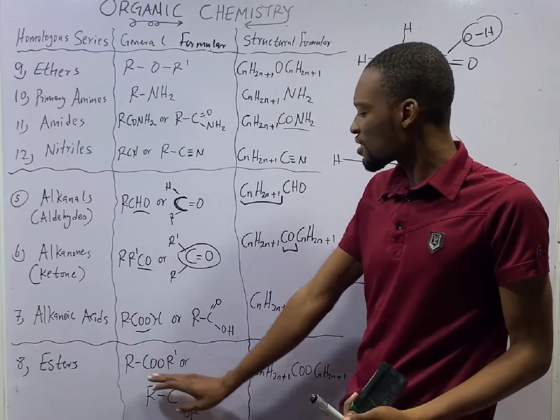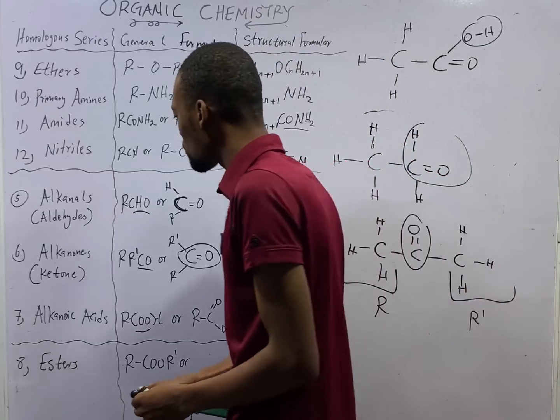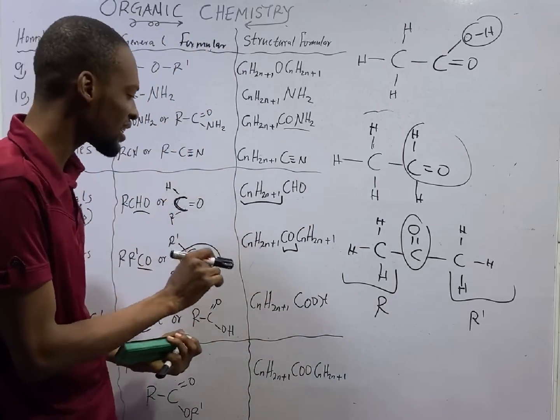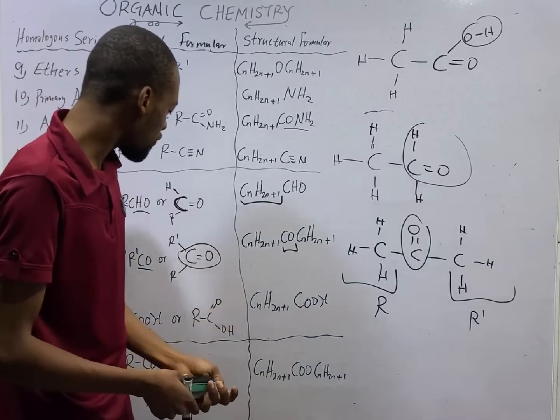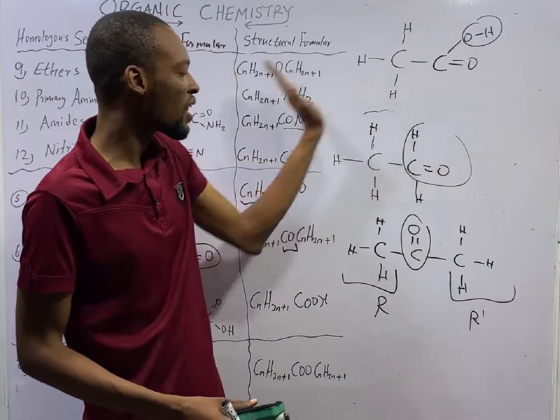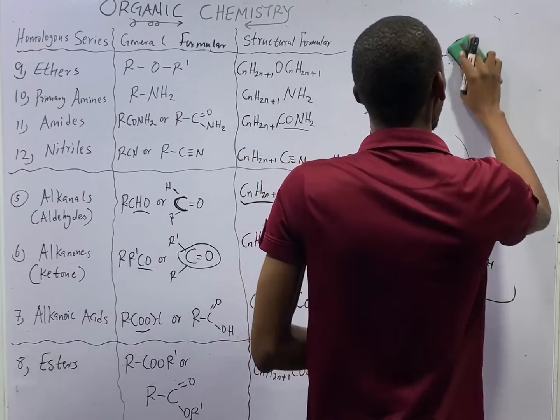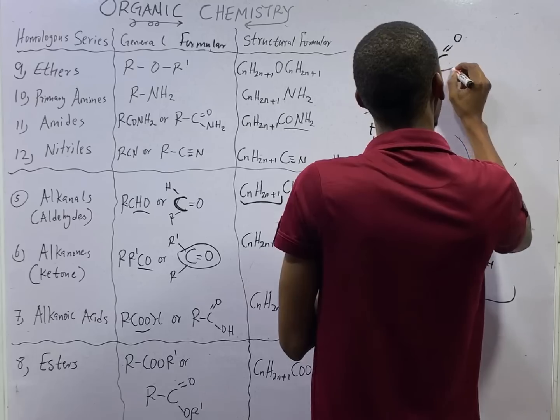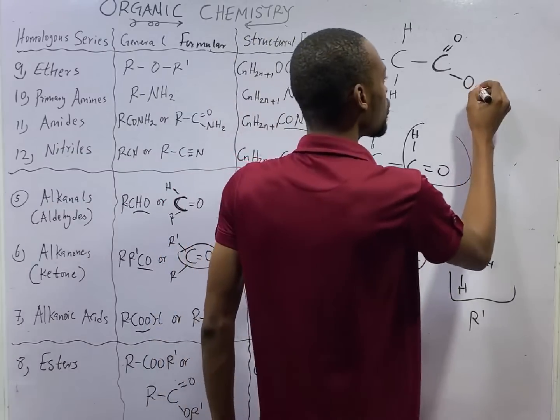Then, for esters, it is R-COO-R'. What does it mean? Esters is similar to alkanoic acid. And the difference between esters and alkanoic acid is similar to the difference between alkanones and alkanals. For alkanoic acid, you see that the COOH is towards the end. It can be at the end here or at the beginning. But for esters, it has COO. Something like this.